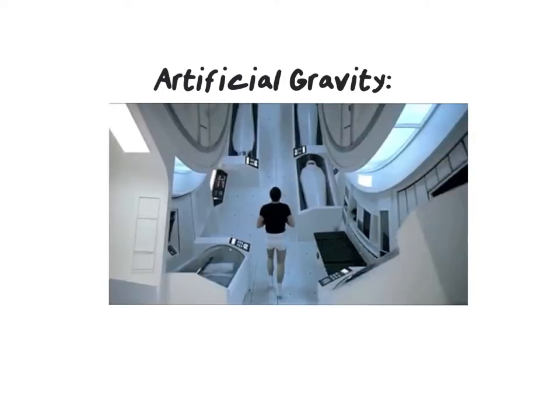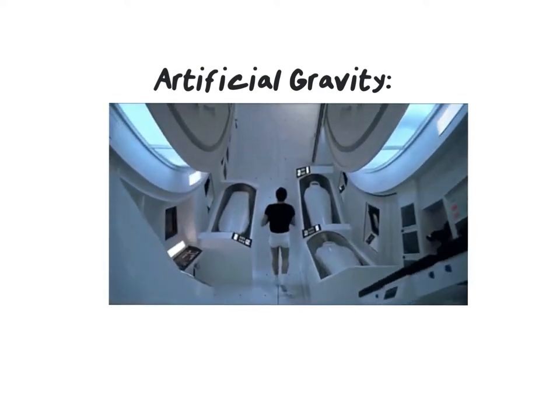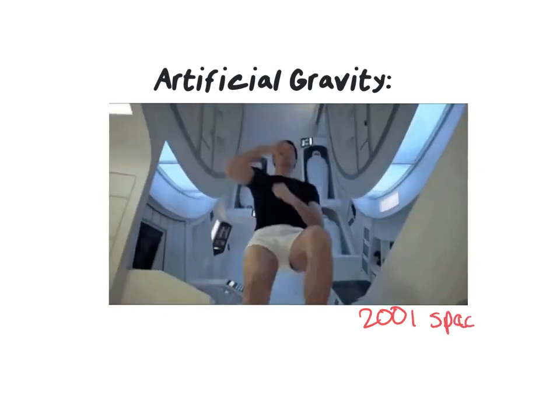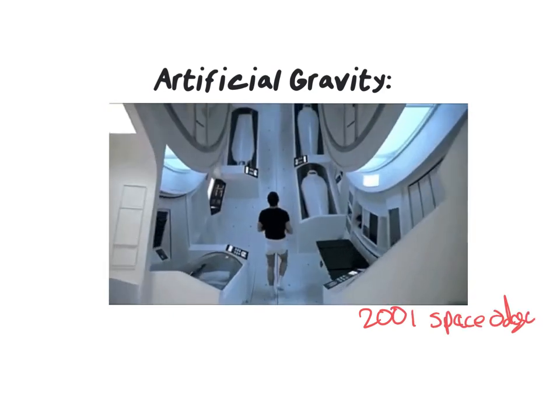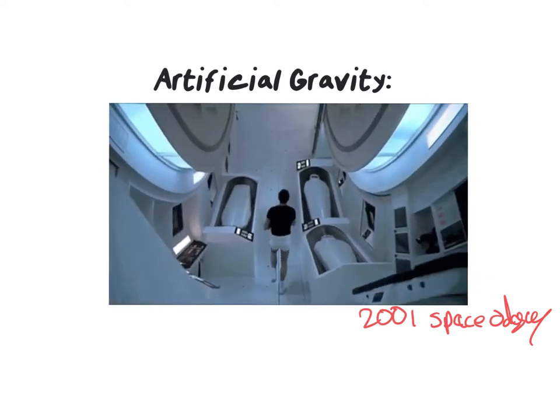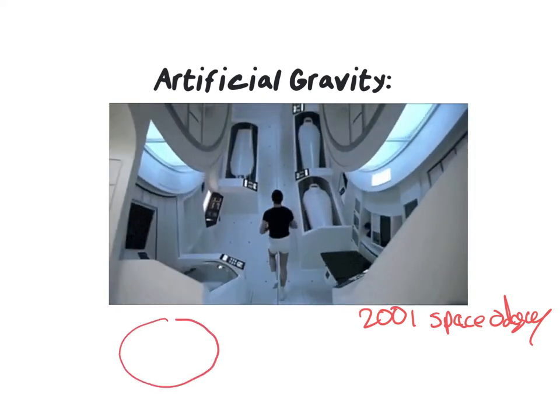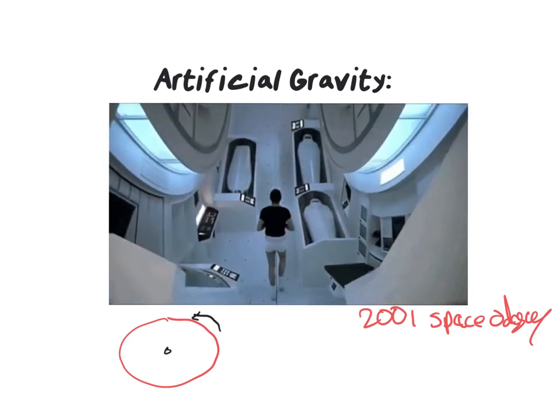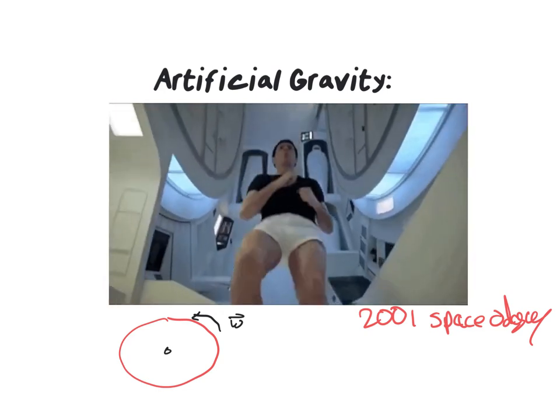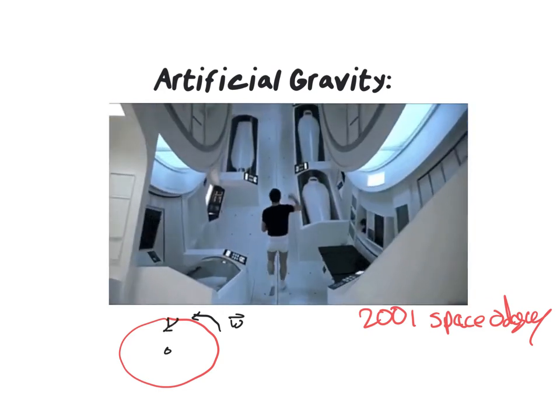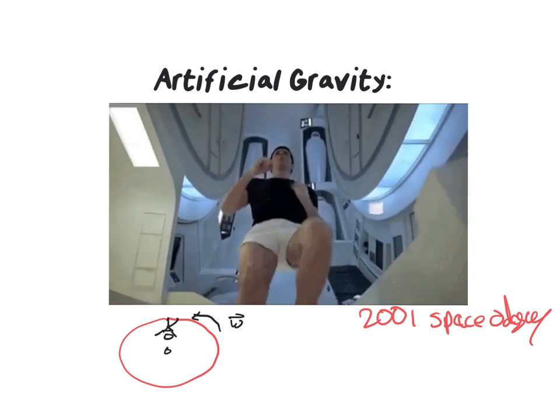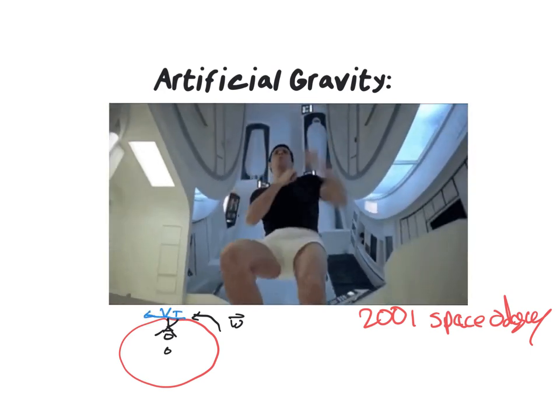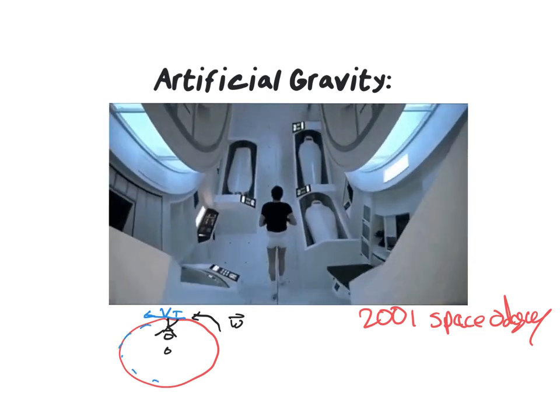This is artificial gravity. This is a famous scene from 2001 Space Odyssey, where a person is moving in a circle. NASA has found out, and we even do this on the ISS, that when you have an object that's moving in a circle, so it has an angular velocity, a person moving on the outer edge of it is not actually moving in a straight line.